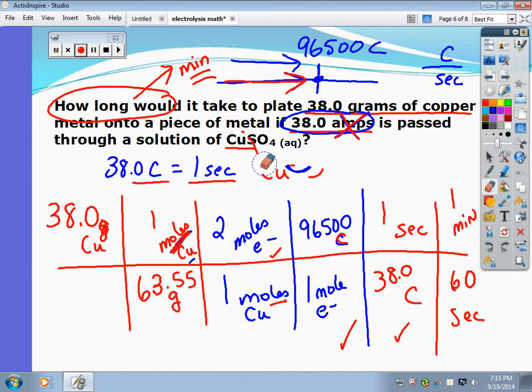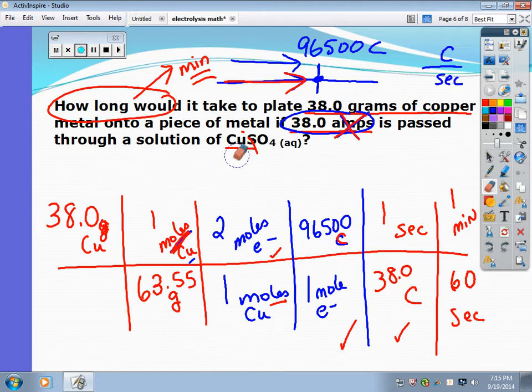So I'm going to erase this up here, so I can put the answer up top. And on your calculator, you would do 38, divided by 63.55, times 2, times 96,500, divided by 38, divided by 60, and the answer I get is 96.17 minutes.